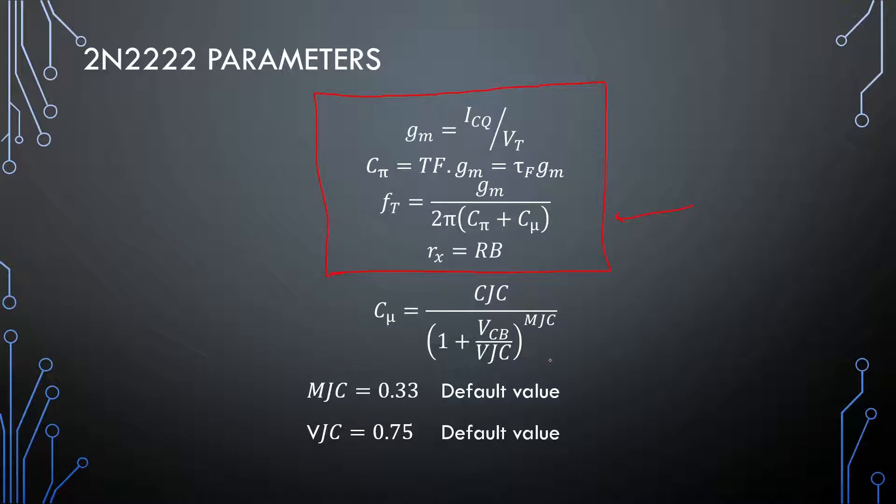Then, there is a longer way to find our Cμ value. And, that is to take that junction capacitance that we got, find our collector base voltage of our transistor and then use this equation to calculate our Cμ. But, the problem is, you typically don't know what these two values are. And, the SPICE model or the simulator will typically use the default values. 0.33 for MJC and 0.75 for VJC. I find that this is a better way to calculate some of those parameters. But, if FT is a bit of an uncertain one for you, you can always use this method.